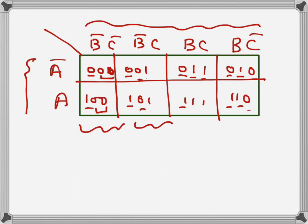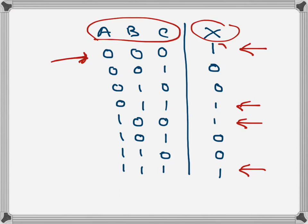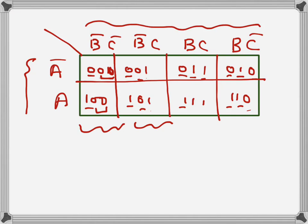Now what I have to do is transfer the values from the truth table into the K-map. We will transfer only the ones into the cells; the zeros we will leave empty. With the ones we will form groups later. First we place the ones in the corresponding cells. This first one here corresponds to 0-0-0.